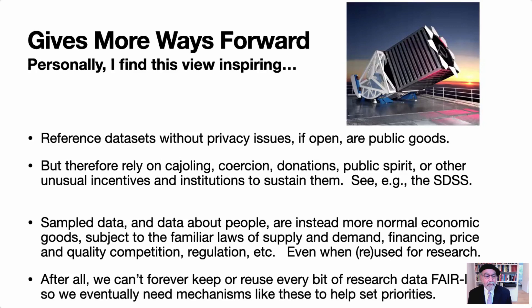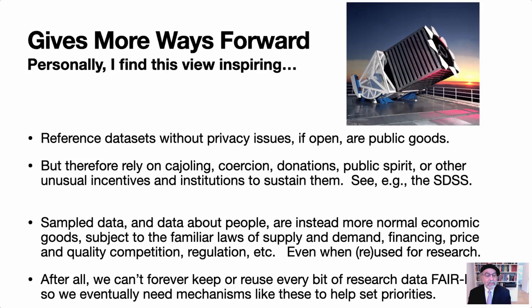One example is the Sloan Digital Sky Survey. If you have a reference data set without privacy issues and it's open, it's a public good — but because it's a public good, you have to rely on cajoling, coercion, donations, norms, public spirit, and unusual incentives to sustain it. Data about people with privacy issues is instead, from this point of view, more of a normal economic good — subject to the familiar laws of supply and demand, financing, price and quality competition, and regulation. That's true even when it's reused for research, and it's not about better technology — these are theorems. We can't forever keep reusing every bit of research data fairly, so eventually we will need mechanisms like these to set priorities.